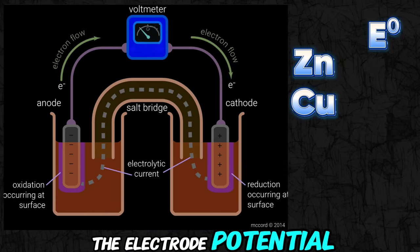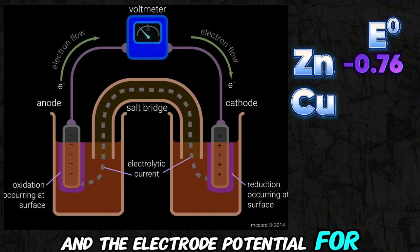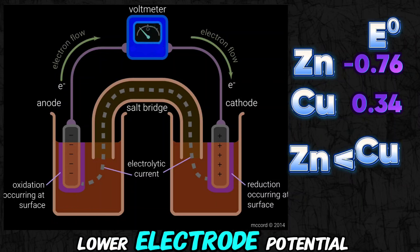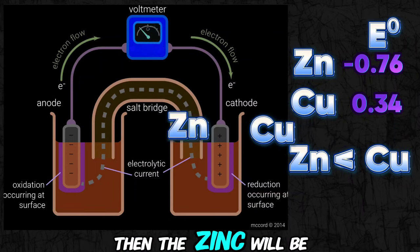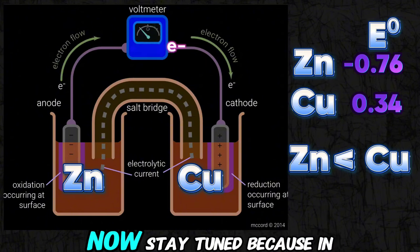The electrode potential for zinc is negative 0.76, and the electrode potential for copper is 0.34. Now because zinc has a lower electrode potential, then the zinc will be oxidized and it will lose electrons.